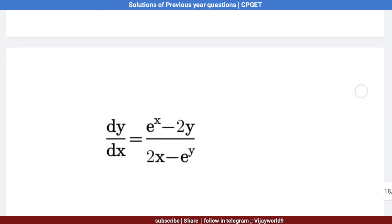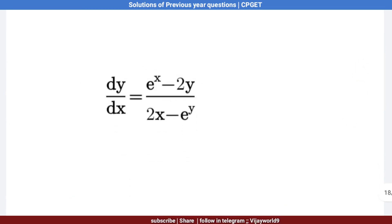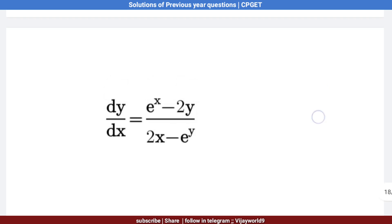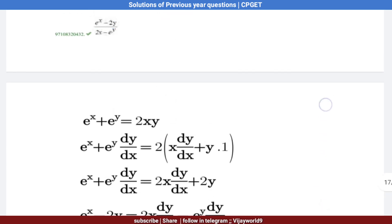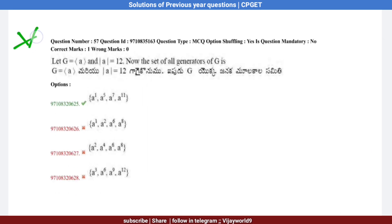Therefore dy/dx = (e^x − 2y) / (2x − e^y). Option 4 is the correct answer.